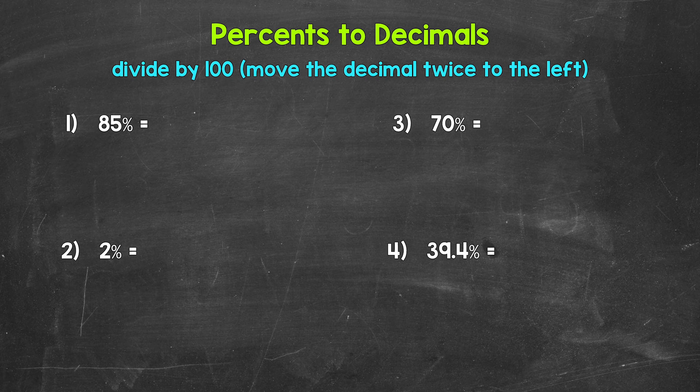In this video, I'm going to cover how to convert percents to decimals. Let's jump into our examples, starting with number one, where we have 85%. Now, when going from a percent to a decimal, all we need to do is divide by 100. Divide the percent by 100, and that will give us the decimal. And remember, a quick way to divide by 100 is to move the decimal twice to the left.